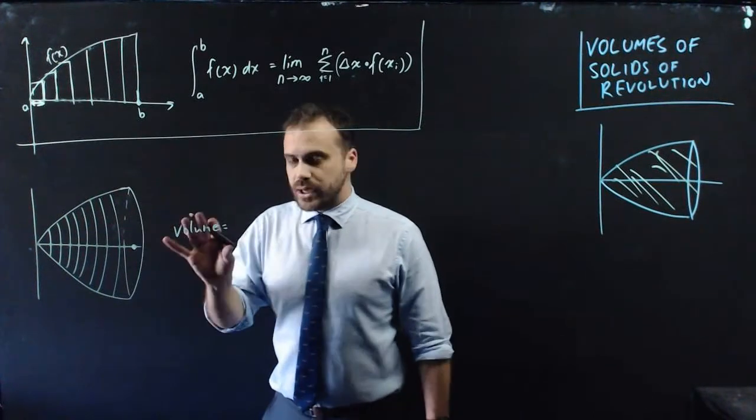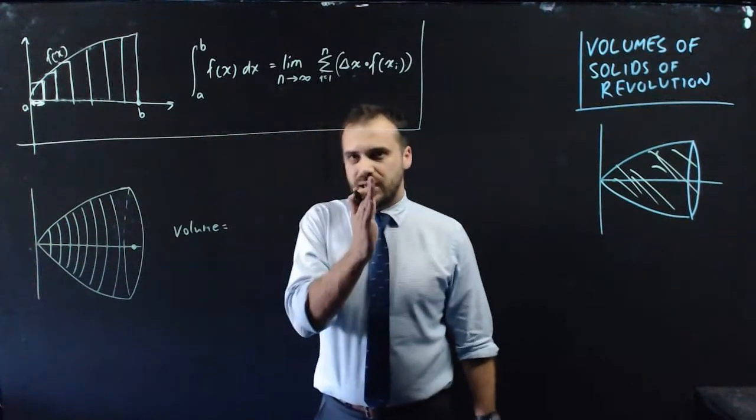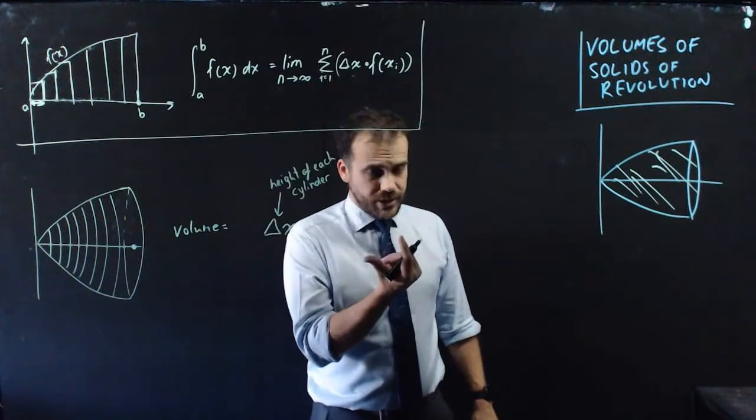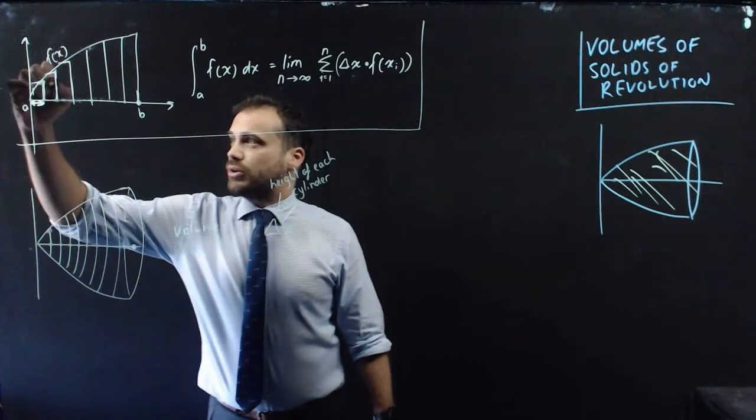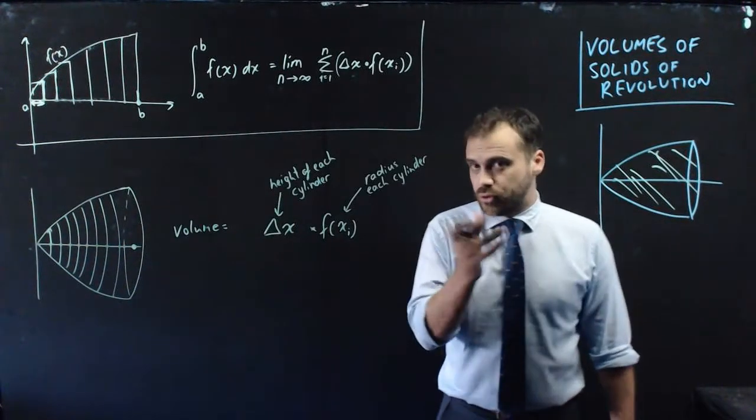So what do we have? Well, we still have that change in x value there, and that's the height of each of those cylinders. Now think about the radius of each cylinder. The radius of each cylinder just corresponds with the height of the function, right? So we're slowly building up to a formula.